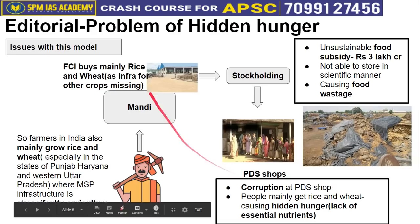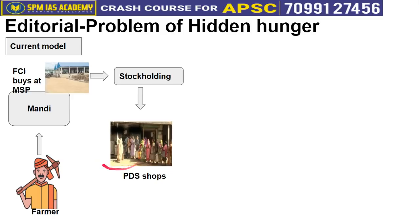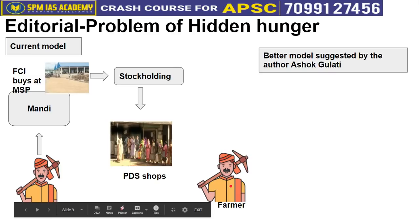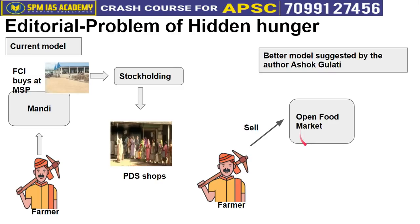These are the many problems associated with the current MSP-PDS model. Ashok Gulati, who wrote this article, then suggests a better model. He recommends letting farmers grow what they want and sell their food grain in the open market based on demand and supply — with no government intervention. Whichever product has demand, farmers should grow and sell that. For example, if green leafy vegetables with iron are in demand, farmers should grow those.